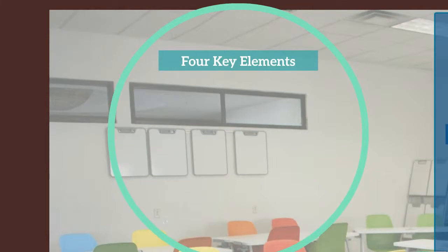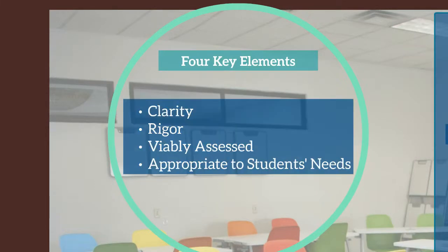There are four key elements of an instructional outcome. First, the wording must be clear and free of jargon. Students must be able to understand what is expected of them. Second, the outcome should be rigorous, which means that it should be precise, thorough, and proven in the classroom through formative and summative assessments.